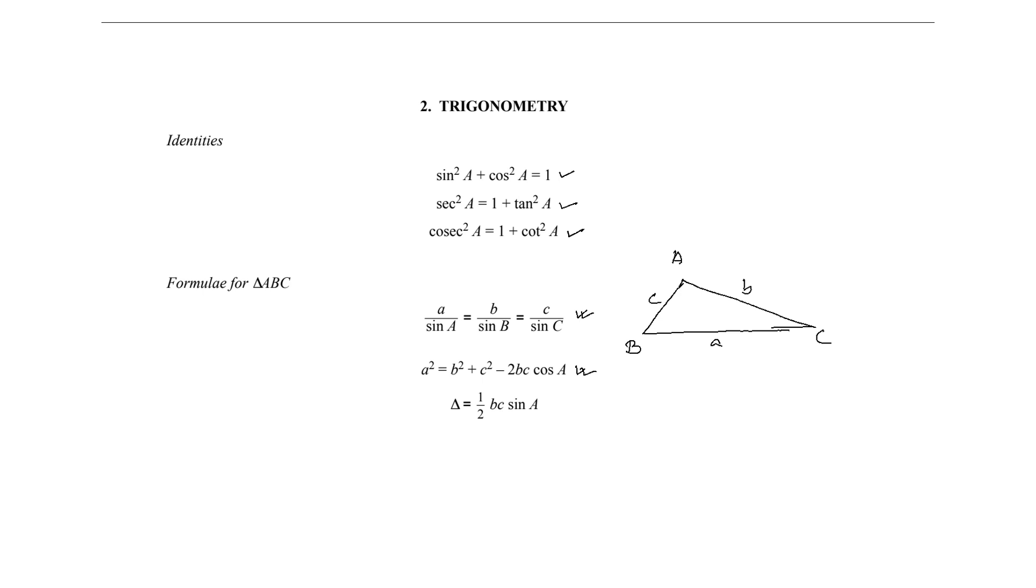Then we have a formula known as the sine rule about this triangle. We have another formula called the cosine rule of this triangle, and last but not least, we have the formula to find the area of triangle ABC using the length and the angle.